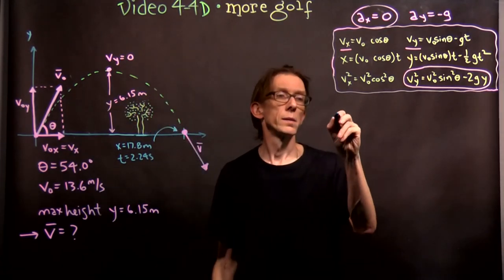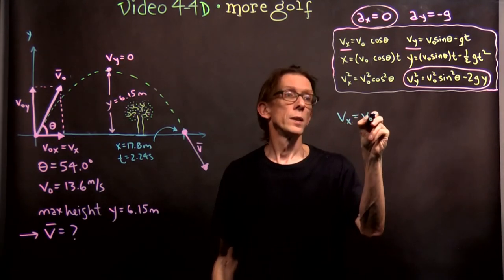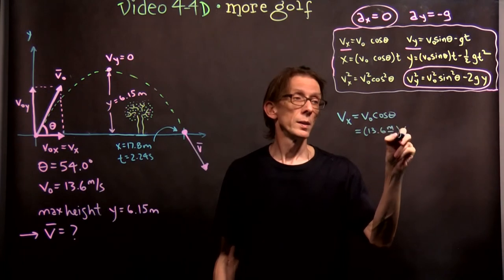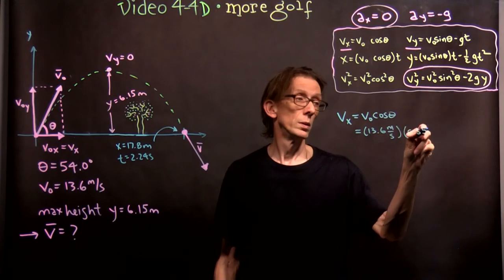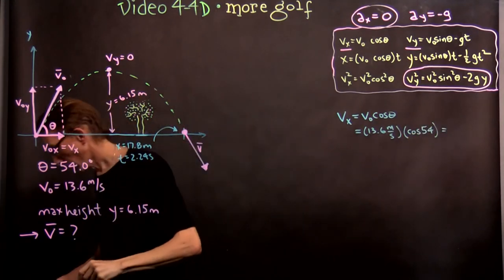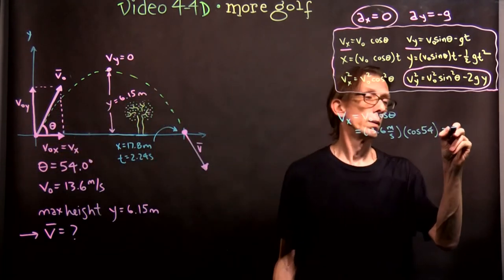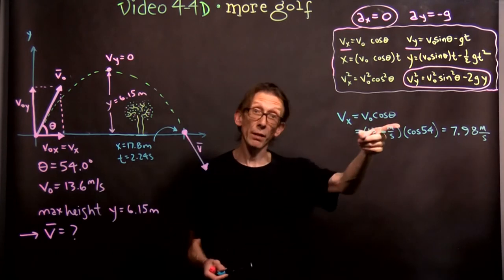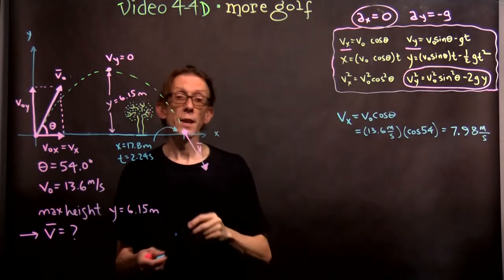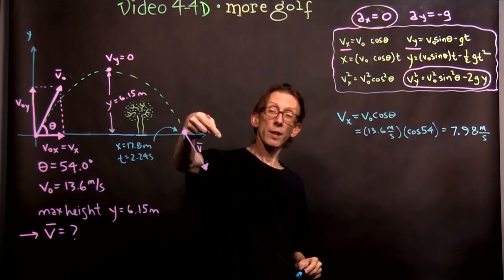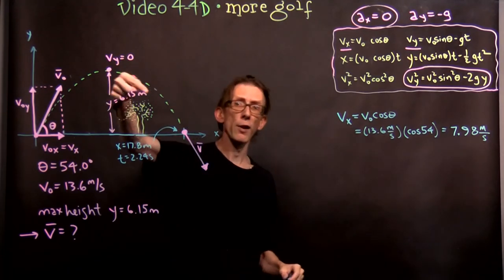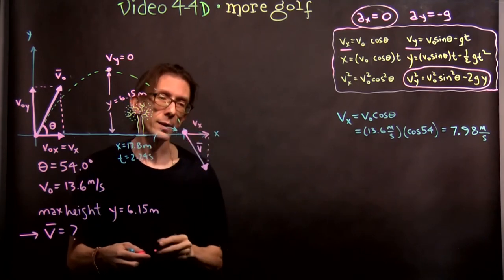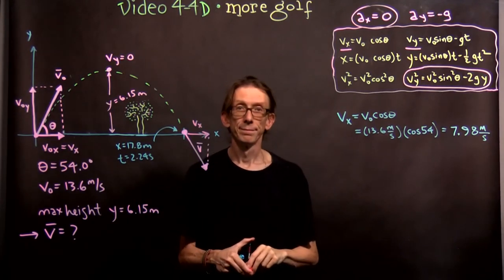So let's find its components. We have everything we need. Vx is V naught times cosine theta. But we know that. That's 13.6 meters per second times cosine theta, which is cosine of 54. We get Vx comes out to be 7.98 meters per second. That's positive. Which makes sense.